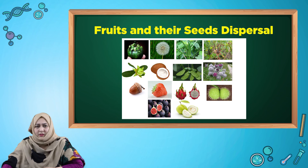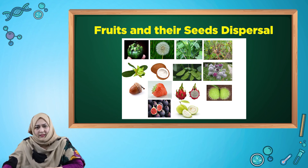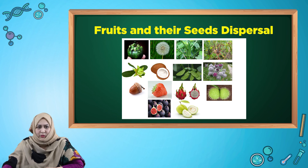Seed dispersal through wind: dandelion and maple are dispersed through wind. Eaten by animals: some fruits are eaten by animals, like guava, strawberries, and figs. Fruits like acorns are sometimes buried by squirrels, and those seeds can grow into a new plant.